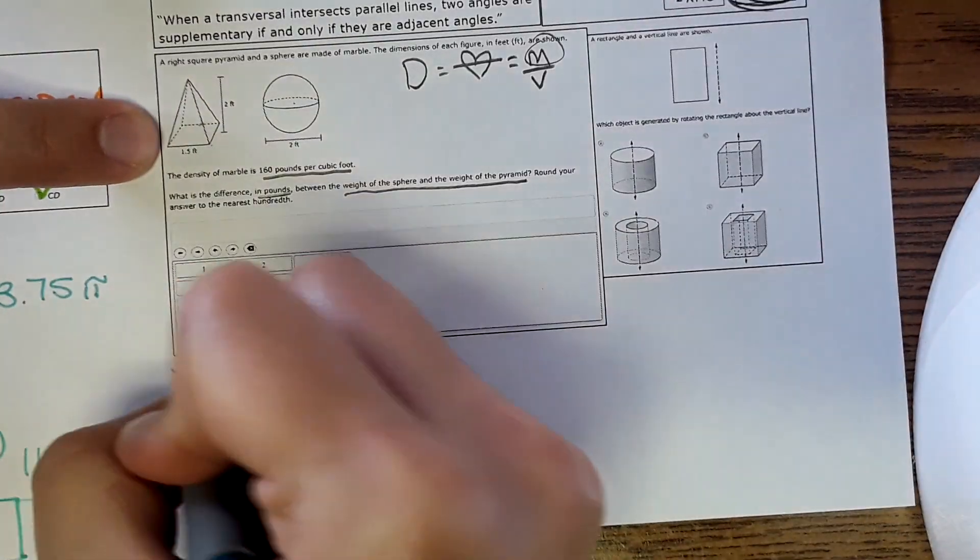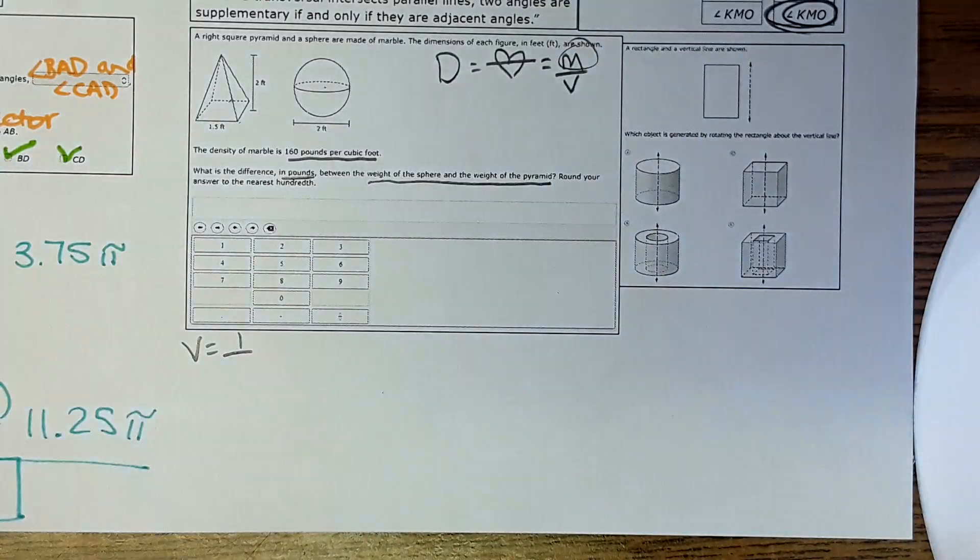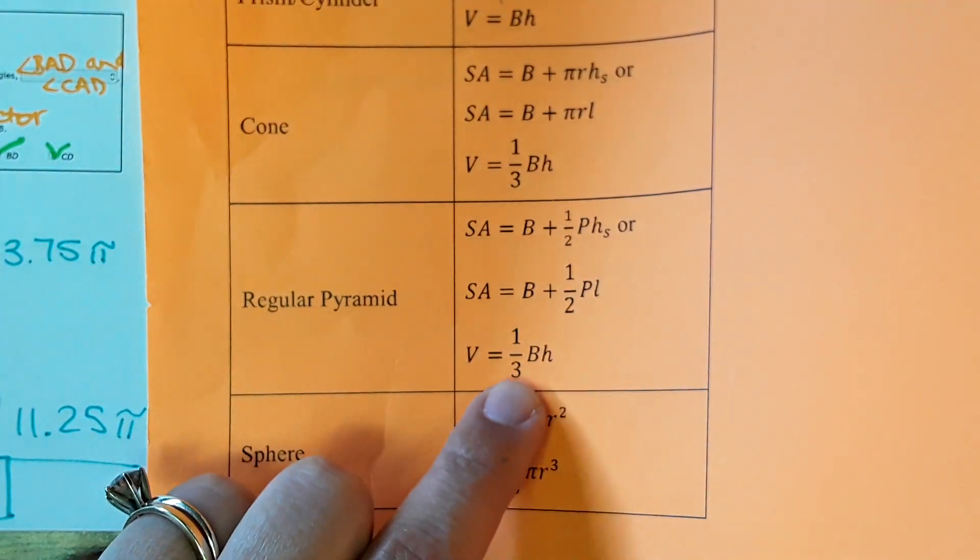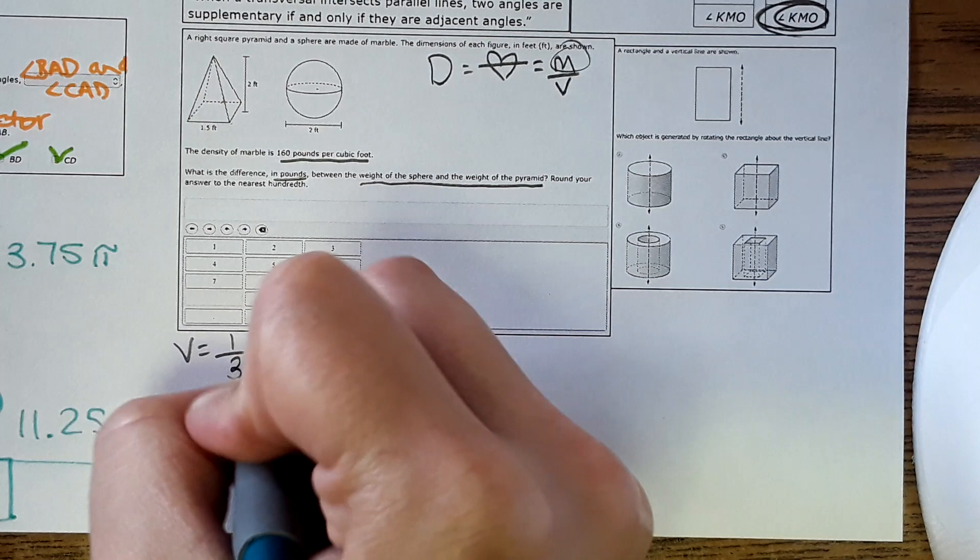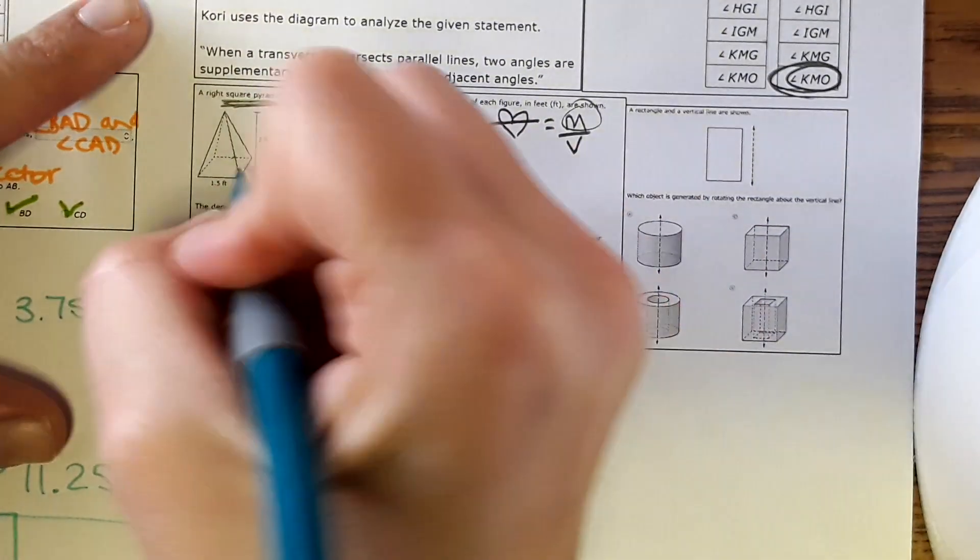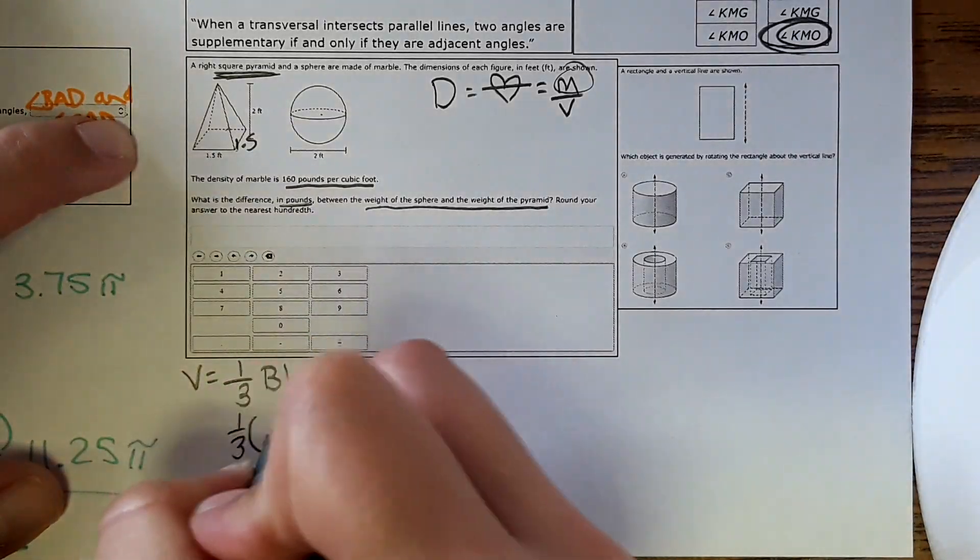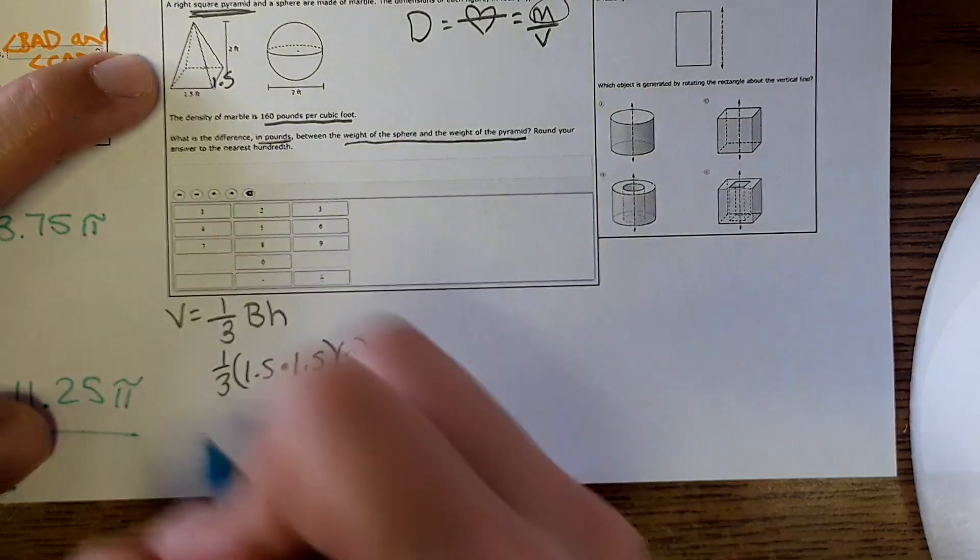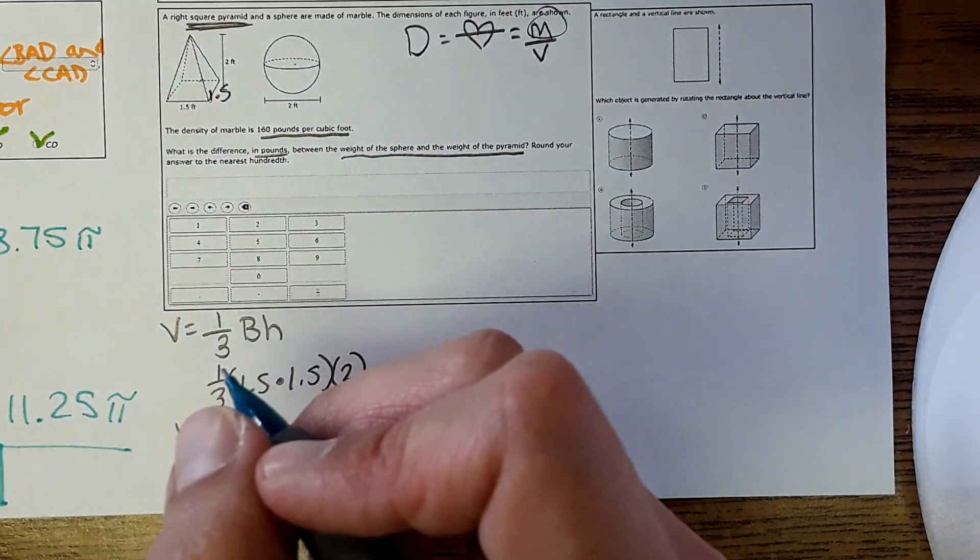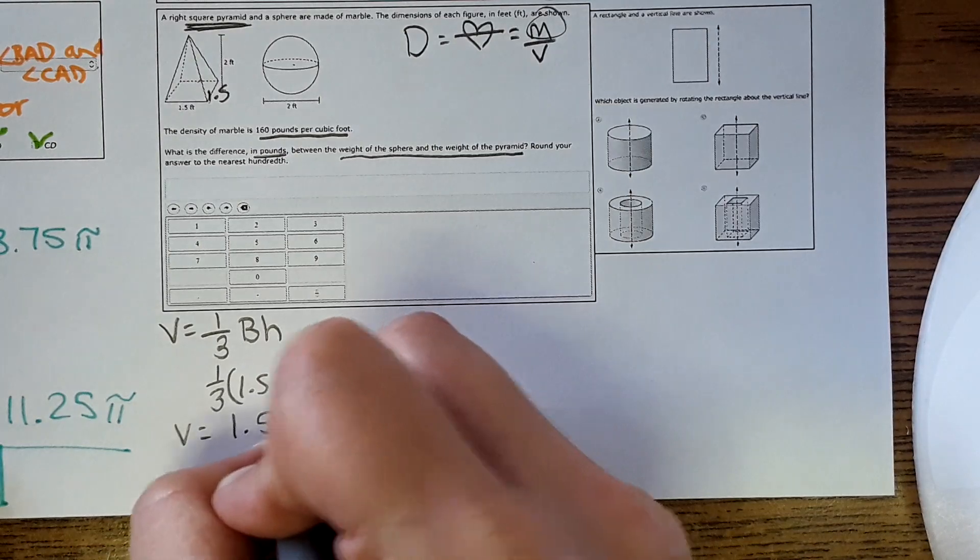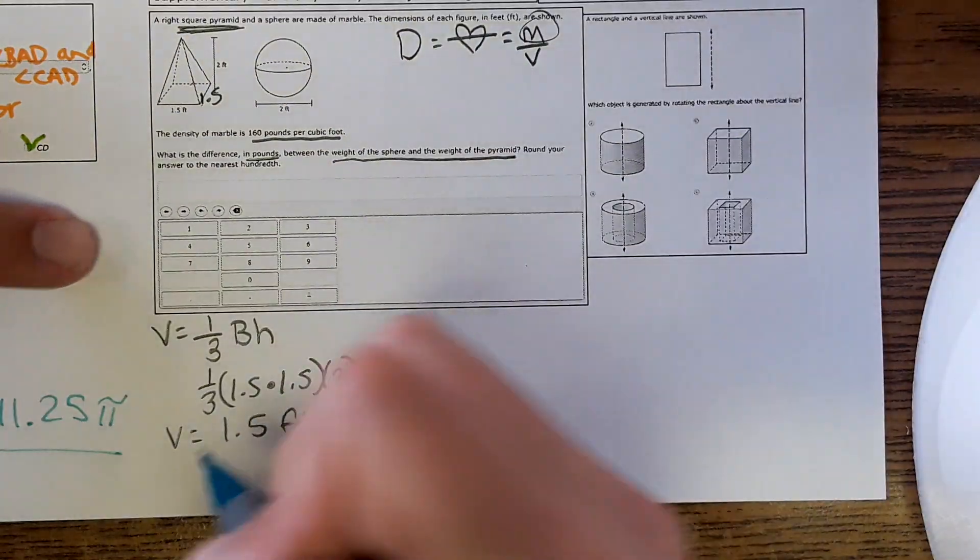First things first, we're going to find the volume of each of these. Volume of the pyramid, you can look at your reference sheet, and volume is one-third area of the base times height. Area of the base, it says it's a square pyramid, so that means the area of the base would be 1.5 times 1.5, and the height is 2. Plug this in a calculator and it comes out to 1.5 feet cubed for the volume, so that's the pyramid.